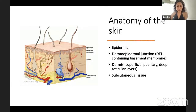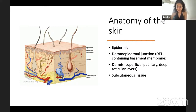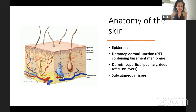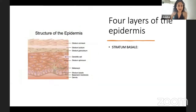A quick run through the anatomy of the skin: you have the superficial epidermis split into four layers, then the dermoepidermal junction with the basement membrane, the dermis with its superficial papillary and deep reticular layers, and then subcutaneous tissue with various adnexa. Here are the four layers of the epidermis.